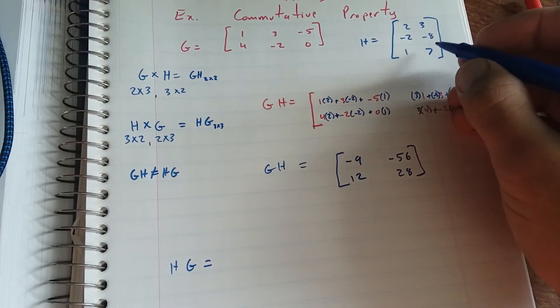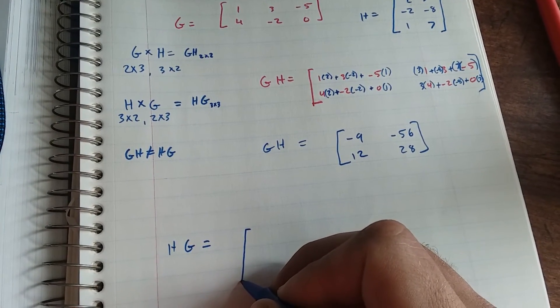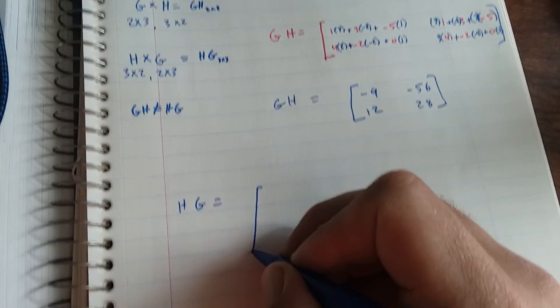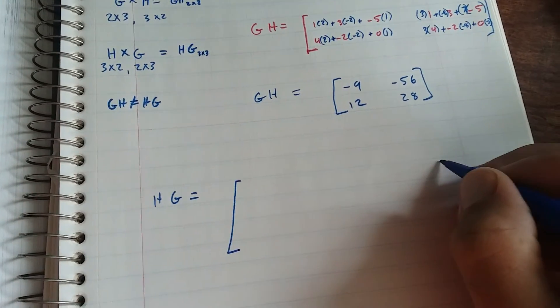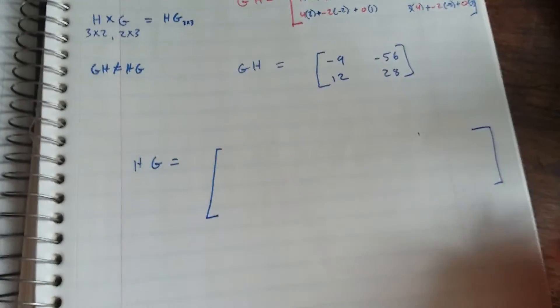You have 2, 3, negative 2, negative 8. You're going to have, you're going to need a lot of space for this one. You're going to have a 3 by 3 matrix, so you're going to need a lot of space.